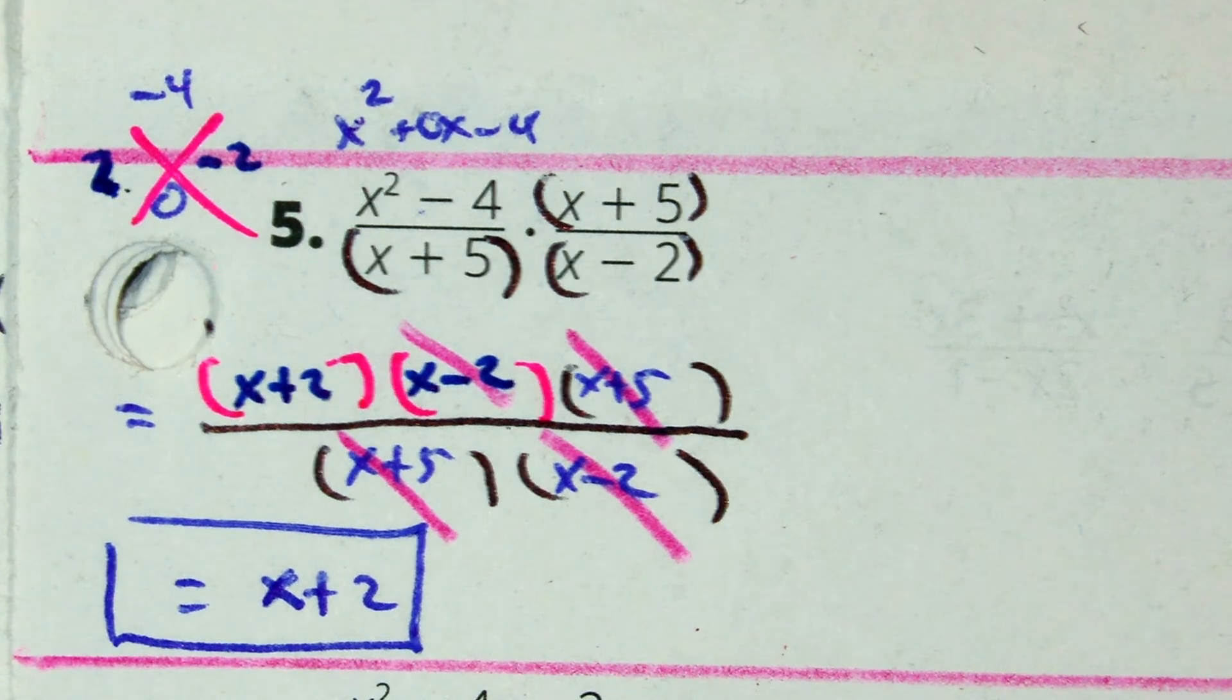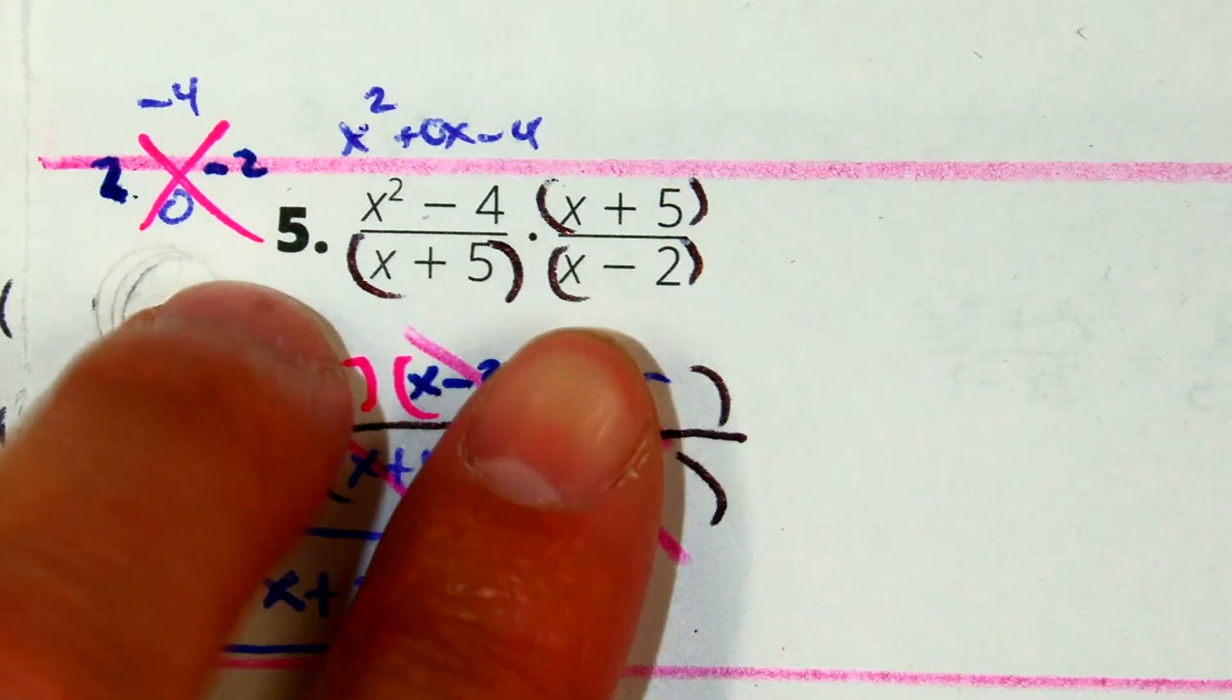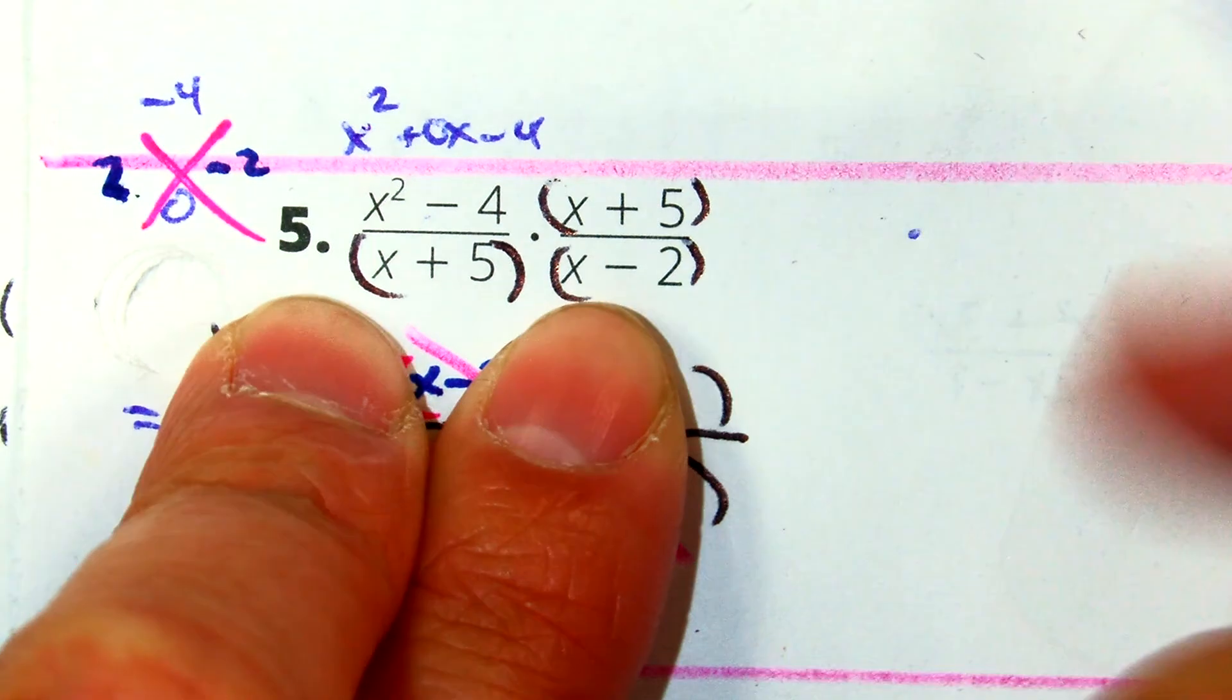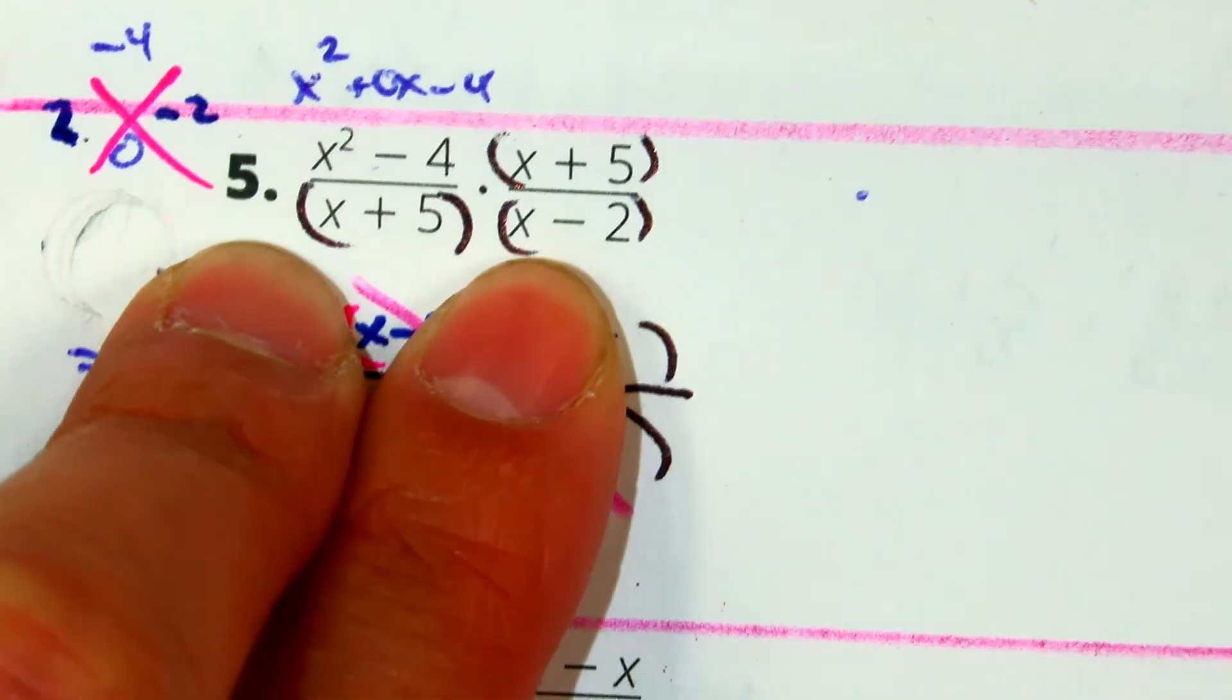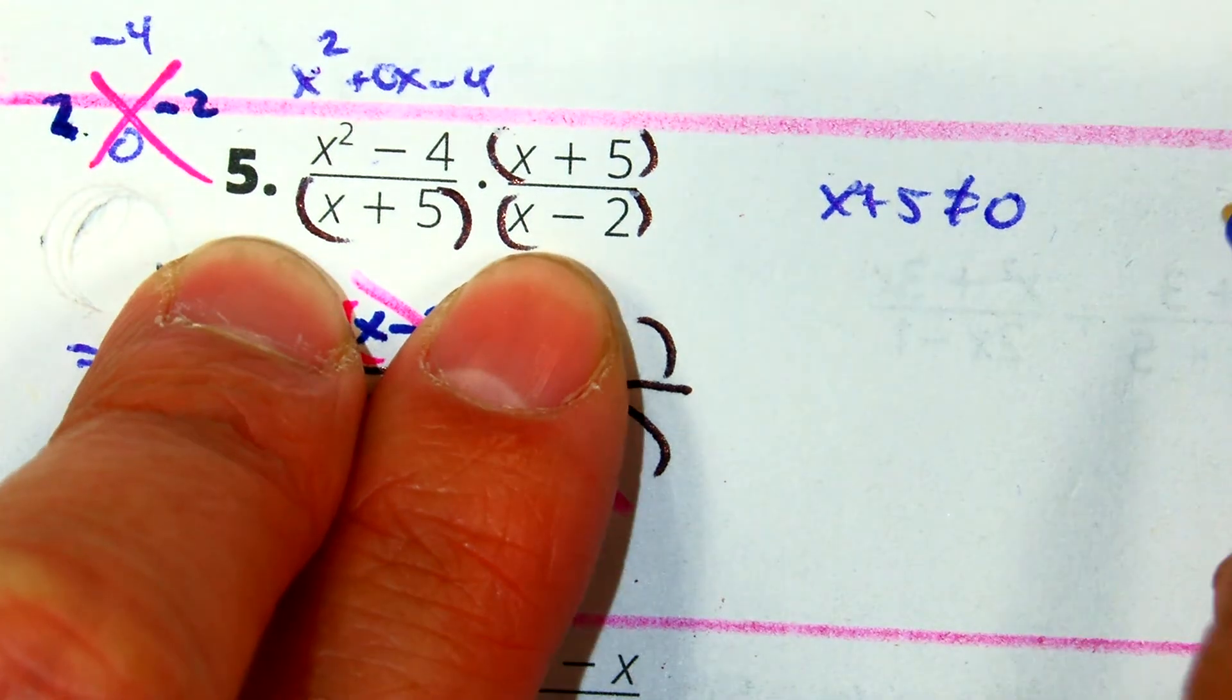What are the two denominators? x plus 5 and x minus 2. Yes. Tell me what to write. x plus 5 equals 0. And the other one? x minus 2 equals 0.